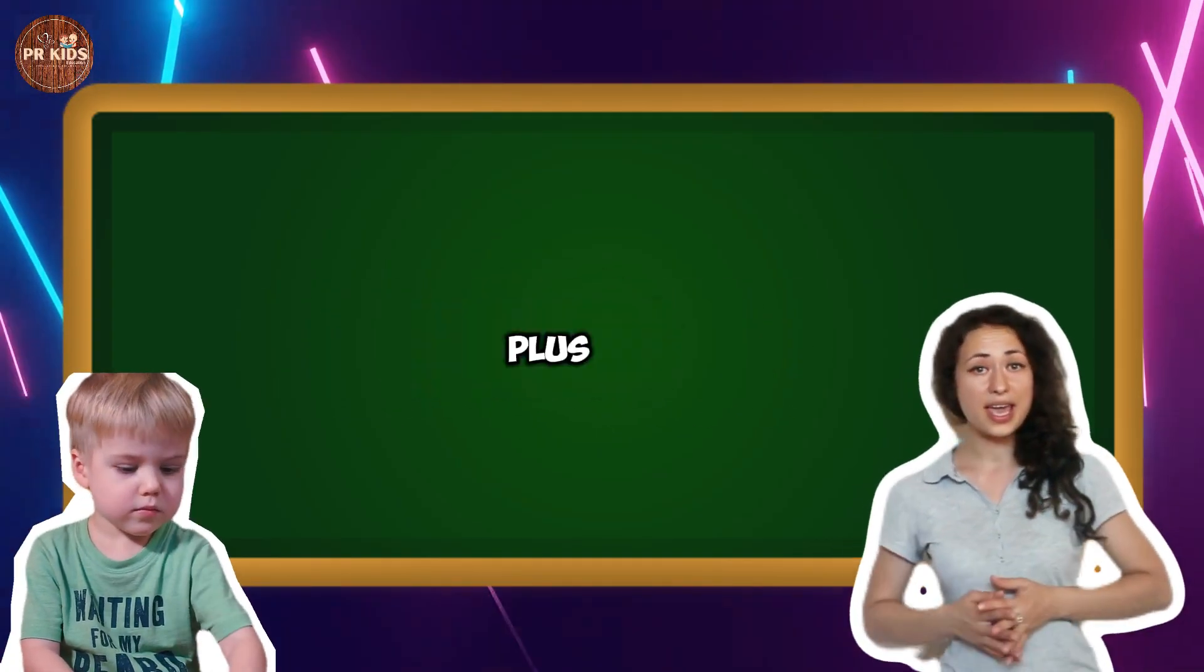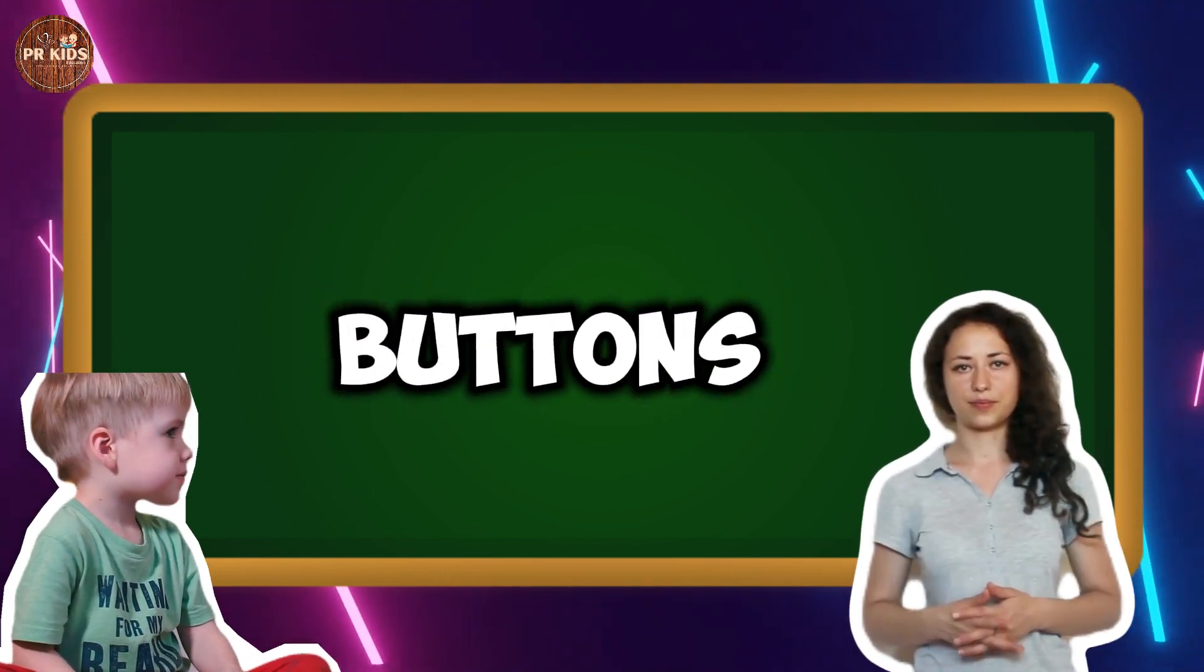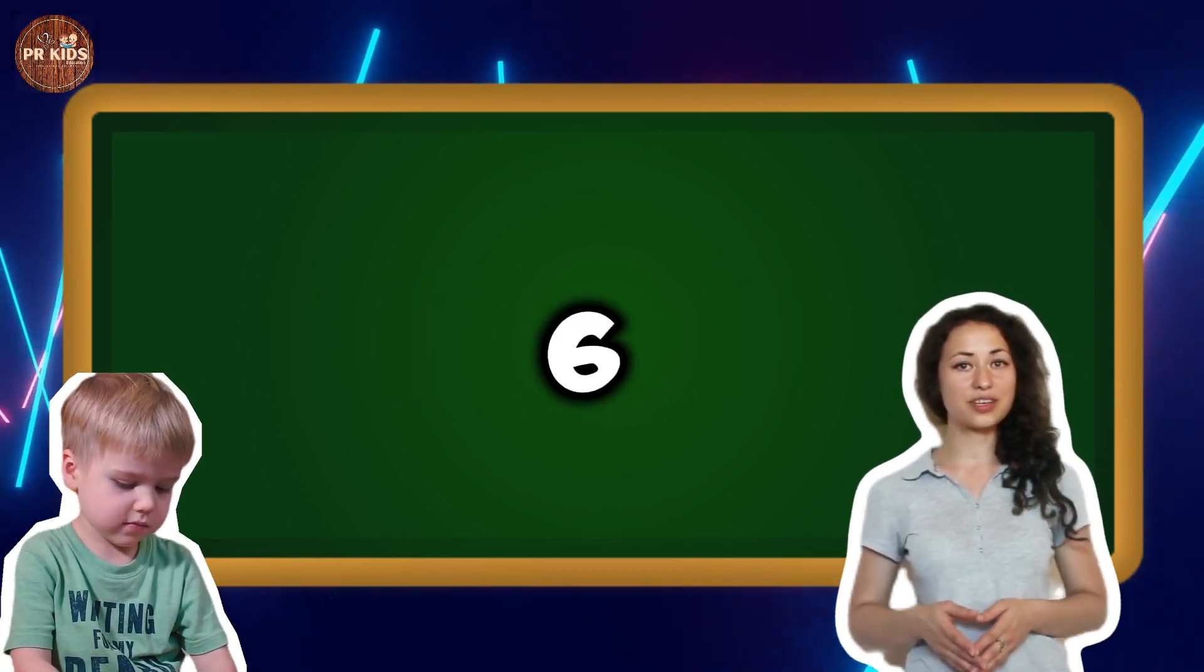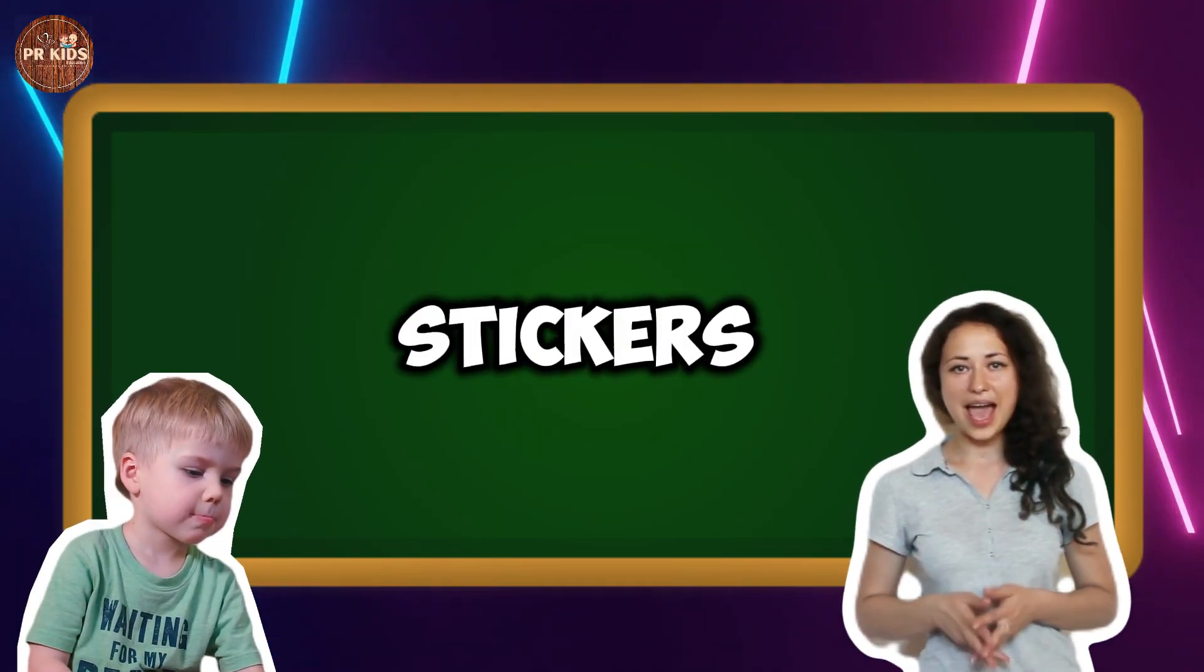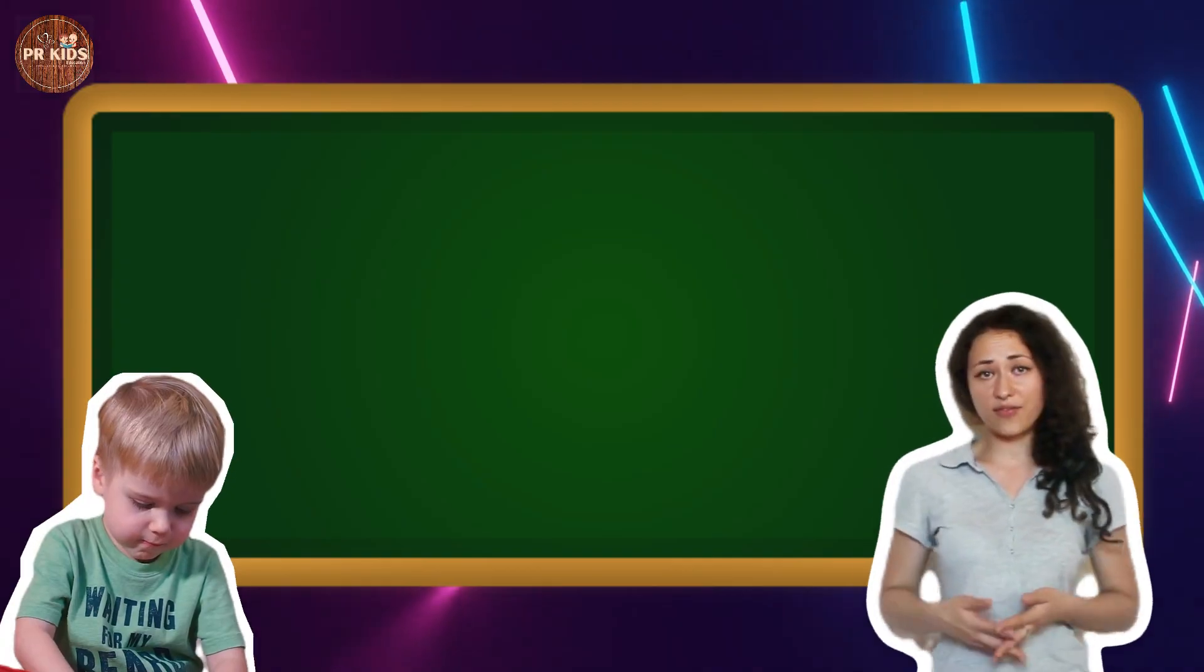Three buttons plus three buttons makes six buttons - six buttons. Six stickers minus two stickers makes four stickers. One, two, three, four - four stickers left.